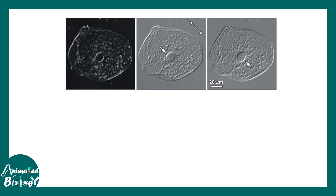In DIC microscopy, it is a dual beam interference device where the dual beam consists of the O ray and the E ray. They combine at the level of the analyzer, and that ultimately forms the image.